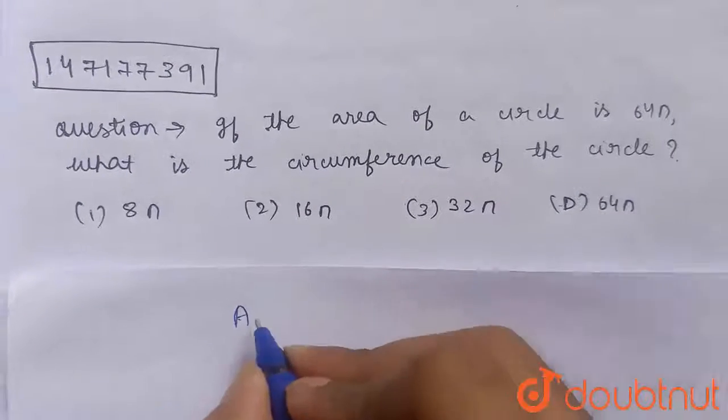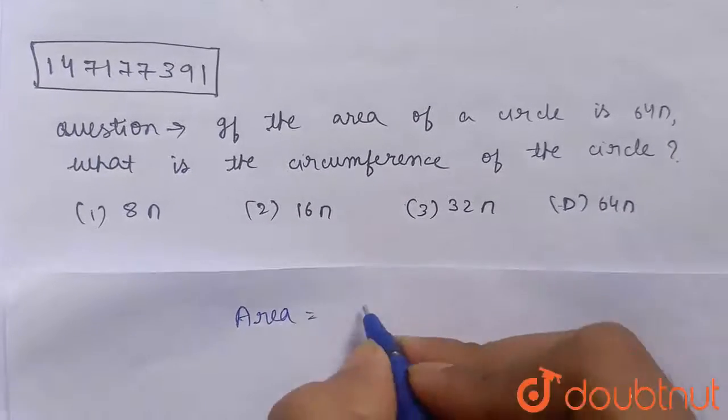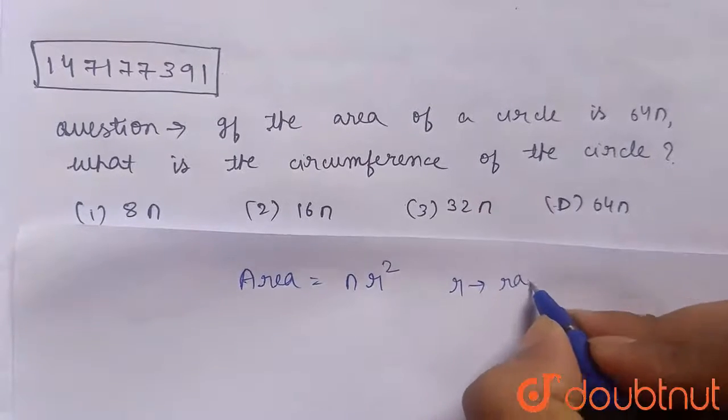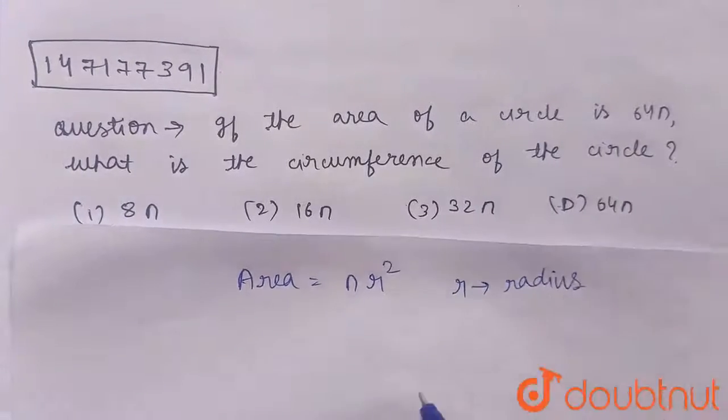The area of a circle is given by πr², where r is the radius of the circle.